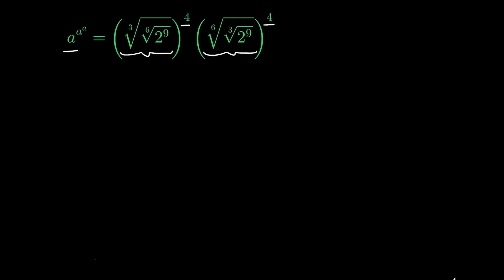First of all I would like to change all the radicals into exponents. So this equation can be written as a raised to the power a raised to the power a, is equal to 2 raised to the power 9.